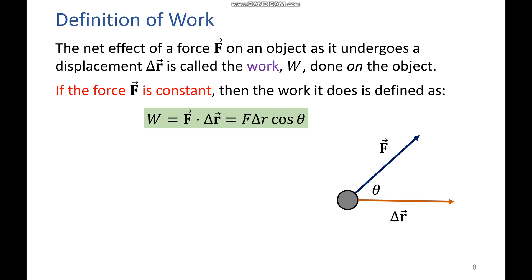So if your force F is constant, then the work it does is defined as this equation right here. W equals force dot delta R, or the force times delta R times cosine theta. Where your F here without the vector sign is the magnitude of your force vector, and the same thing goes for your delta R. And of course you guys know theta. It's our angle between the force vector and your change in distance.